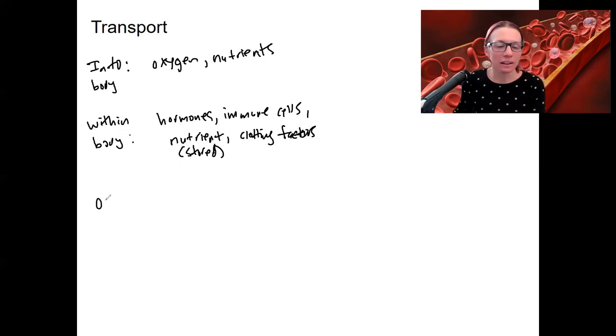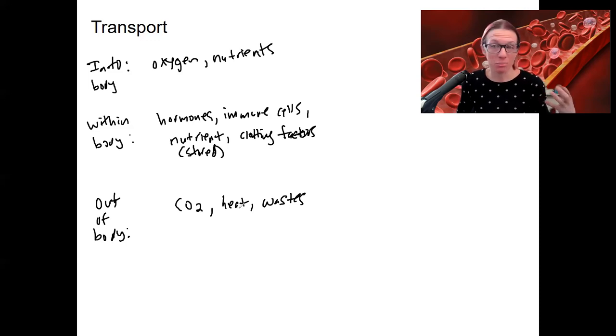Then we've got things that are transported out of the body. So things like carbon dioxide, heat and all kinds of wastes. So again, we've got integration with the lungs, with the skin and actually blood vessels to vasodilate, kidney and digestive system for wastes.